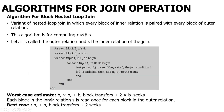Coming to the block nested loop join: here you create separate block loops for the two relations, adding two extra block-level for loops before the record-level search. For the worst case (insufficient memory), the cost is BR × BS + BR block transfers and 2 × BR seeks. If you have enough space and a small database that fits in memory, you can directly go for BR + BS + 2 seeks.